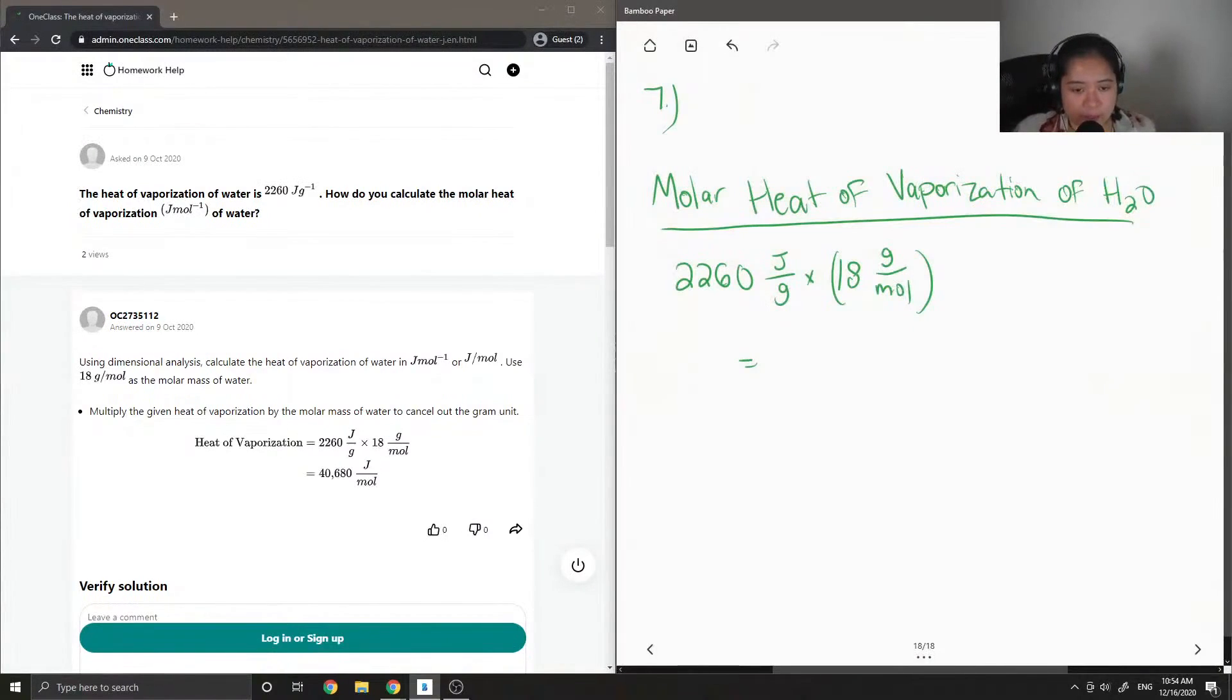That's why molar heat of vaporization is interesting to use, because this is dependent on how many moles of water there are in the system. So this value will be the same throughout, like any of the tables that you might get in your test or in a textbook.